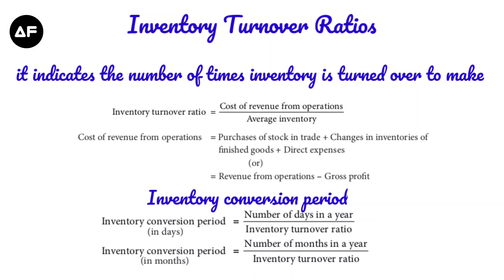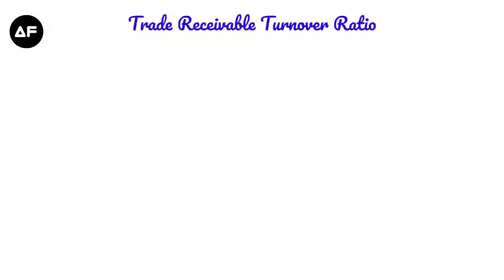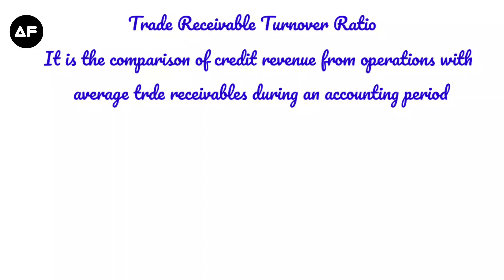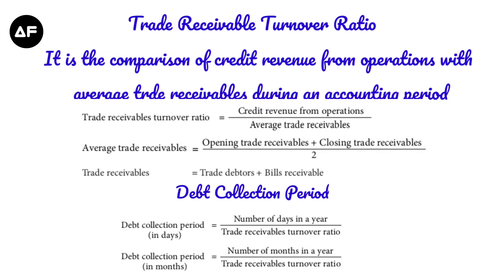Next is the trade receivable turnover ratio, which applies to credit sales. When we do credit sales, we collect money from our debtor — the person to whom we sold on credit. This ratio compares credit sales with the average amount of receivables collected from those debtors during an accounting period. The formula is credit revenue from operations divided by average trade receivables, which includes opening and closing trade receivables as well as opening and closing bills receivables.